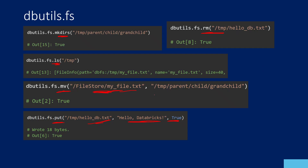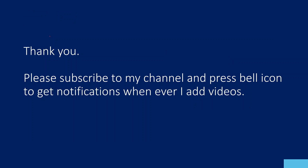This is all about File System Utilities inside the Databricks Utilities. There are also a couple of commands inside the File System Utility that help you mount external storages with your Databricks file system, so you can access those storages as if accessing a local file system. I will explain that in detail in our upcoming video. Thank you for watching — please subscribe to my channel and press the bell icon to get notifications whenever I add videos.